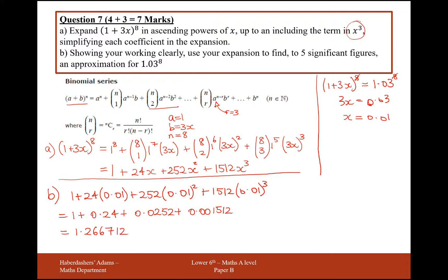Rounding to 5 significant figures: 1, 2, 3, 4, 5 — does the 1 round up the 7? No, it doesn't. So this is going to be 1.2667 to 5 significant figures. 7 marks for that question. Thank you.